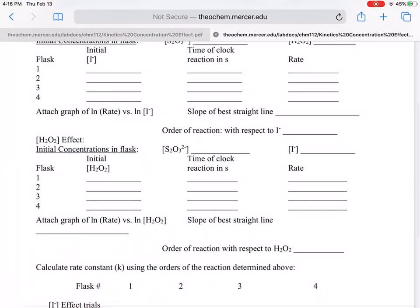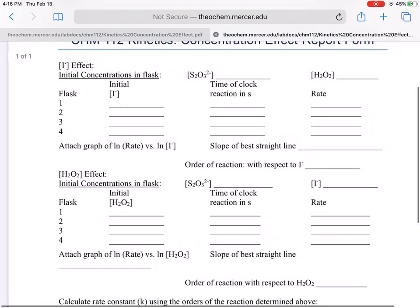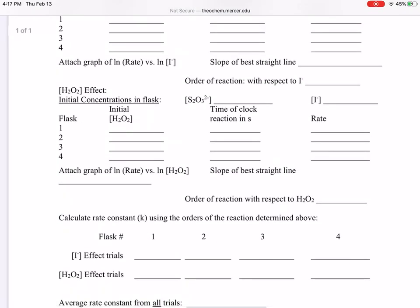Now we have our initial concentration of I⁻, our rate, and we can generate a graph. Your graph is natural log of rate versus natural log of I⁻, and the slope should be positive — probably a fractional number. The slope of that best-fit line gives you the order of reaction with respect to I⁻. Similarly, the slope of the best-fit line for natural log of rate versus natural log of [H₂O₂] gives you the order of reaction with respect to hydrogen peroxide.